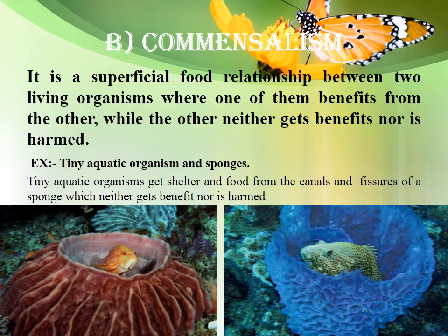The second type is commensalism — a food relationship between two living organisms where one of them gets a benefit and the other neither gets harmed nor benefits. For example, the tiny aquatic organism — meaning the fish — and the sponge. The fish takes the sponge as a shelter, while the sponge is neither harmed nor benefits.